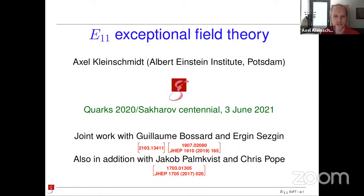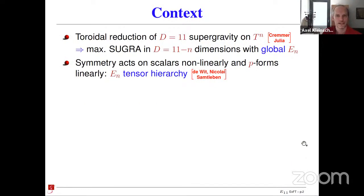There were two related talks already by Edvard Mzaev and Ilya Bachmatov on Monday, but I will take a moment to paint a bigger picture. The context of this work is something well known for over 40 years: if you take maximal supergravity in 11 dimensions and perform a toroidal reduction on a torus T^N, Cremmer and Julia realized in the late 70s that you get the maximally supersymmetric gravity theory in the reduced dimension, 11 minus N. The surprising result is that this theory has a global symmetry, an exceptional symmetry E_N.